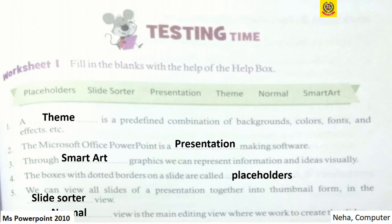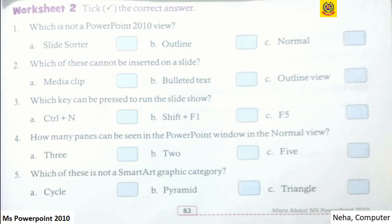Now moving to Worksheet 2. You have to find the correct answer which is not a PowerPoint 2010 view - it is outline view. Which of these cannot be inserted on a slide? Outline view. Which key can be pressed to run the slideshow? F5. How many panes can be seen in PowerPoint window in the normal view? Three. Which of these is not a smart art graphic category? Triangle.